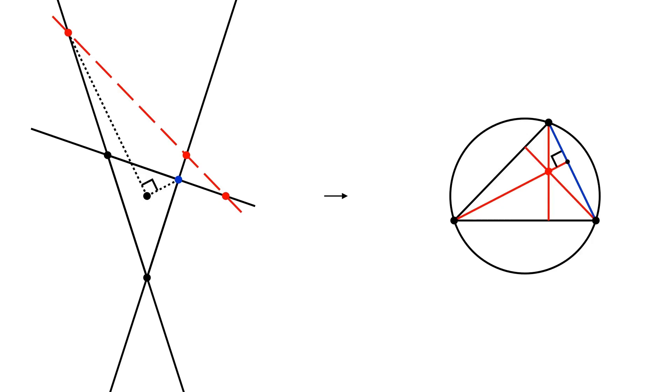Our problem translates to a simple fact that three altitudes intersect in one point. Note that we have actually proven a stronger statement. We never have actually used that the point is the incenter of a triangle. So, the statement of the problem will be true for any point inside the triangle.